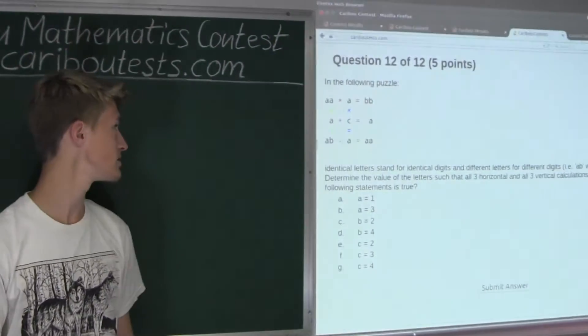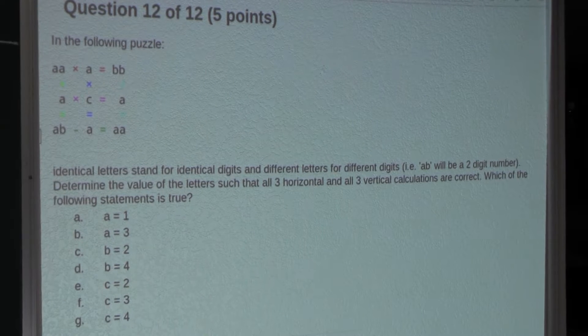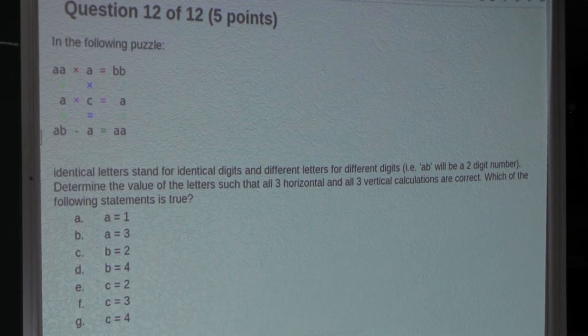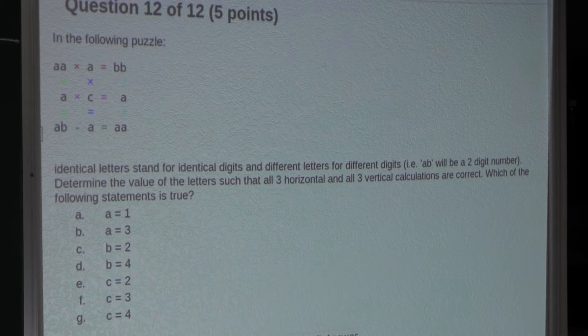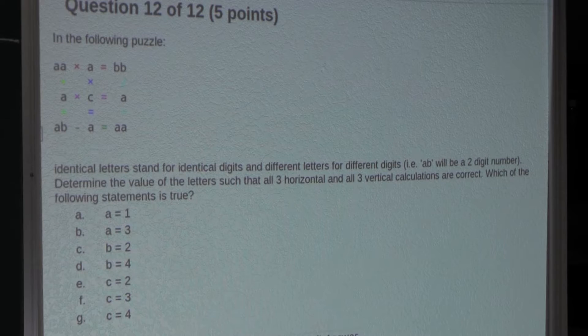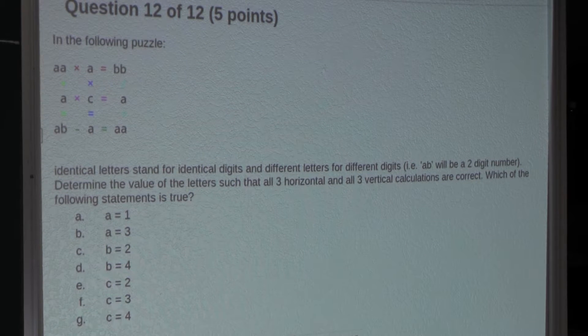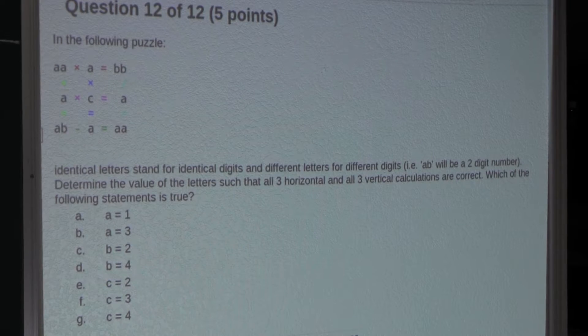So, the question is, in the following puzzle, identical letters stand for identical digits and different letters for different digits. For example, AB will be a two-digit number. Determine the value of the letters such that all three horizontal and all three vertical calculations are correct. Which of the following statements is true?